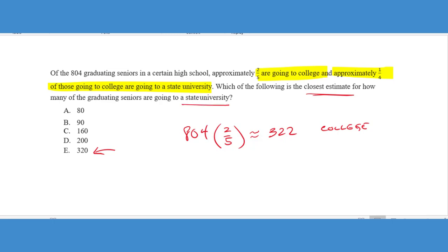It says, how many seniors are going to a state university? Well, if we have roughly 322 going to a college and one fourth of those are going to a state university, that gives me roughly 80 students who are going to a state university, which gives us choice A as the correct answer choice.